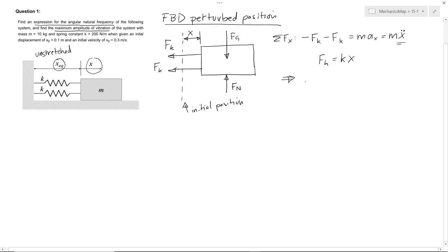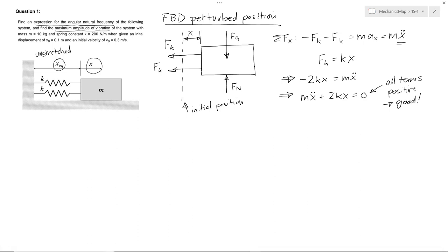So we can write our equation of motion as minus 2kx equals mx double dot. And then we'll write that into a standard form, moving all the terms to one side. We get mx double dot plus 2kx equals 0. We'll note that all the terms in this equation are positive. And that's good. That's what we want. If you find at this point you've got a negative term, you're going to have to go back to your free body diagram and your equation of motion in order to figure out what's going on.